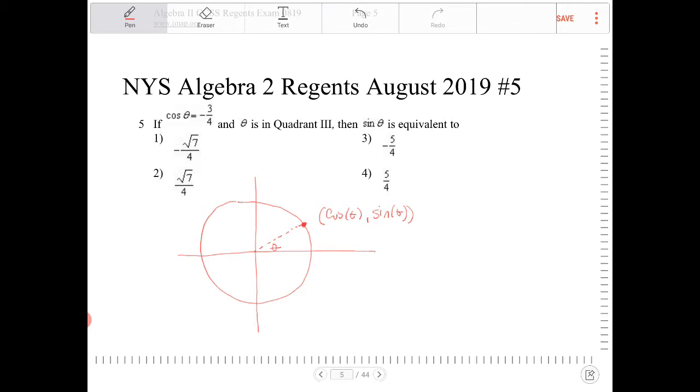In other words, when theta equals zero, when we're on the x-axis, the x and y coordinates are 1, 0. When theta equals 90, we're at 0, 1. When theta is at 180, we're at negative 1, 0. When theta is at 270, we're at 0, negative 1, and so forth.